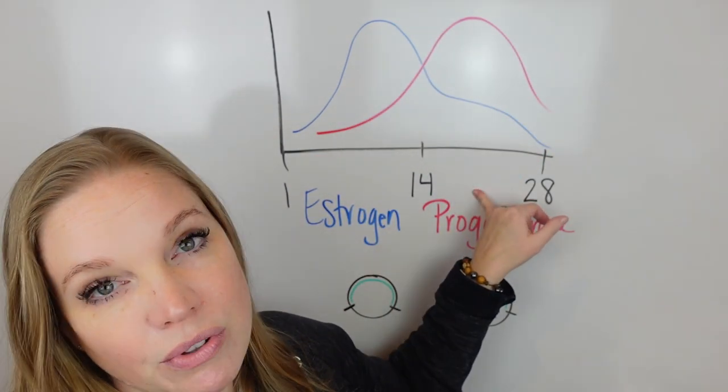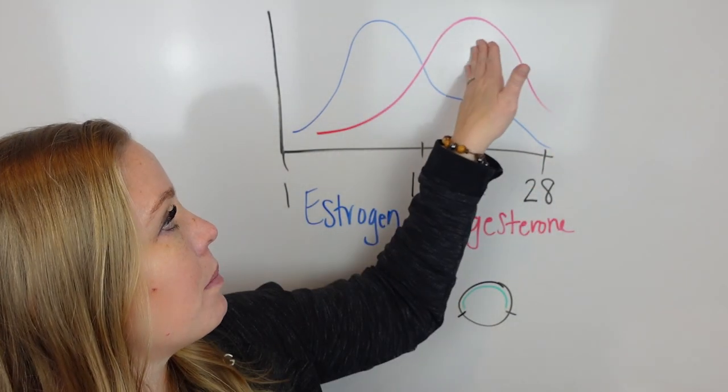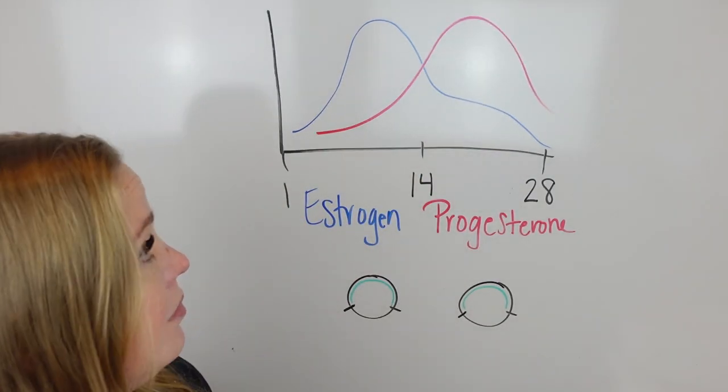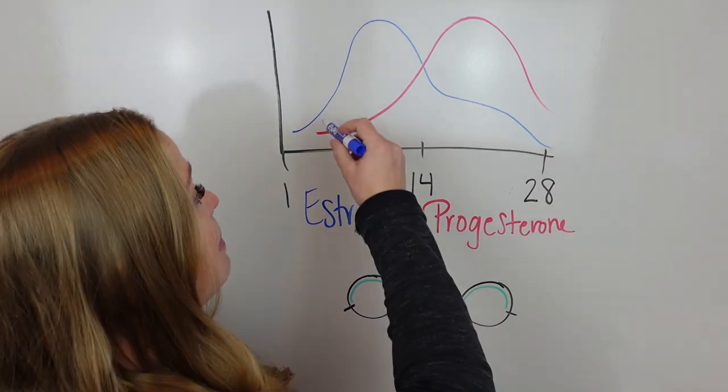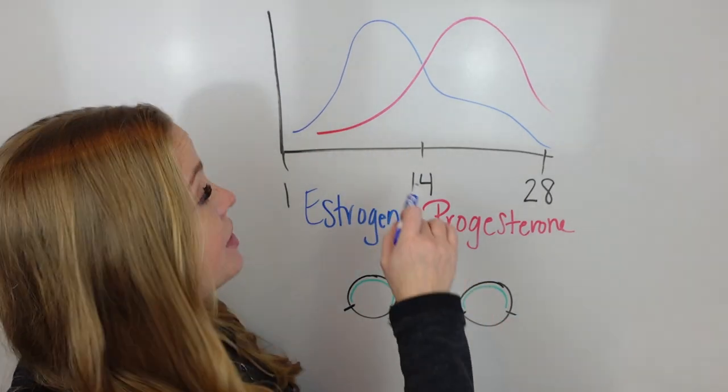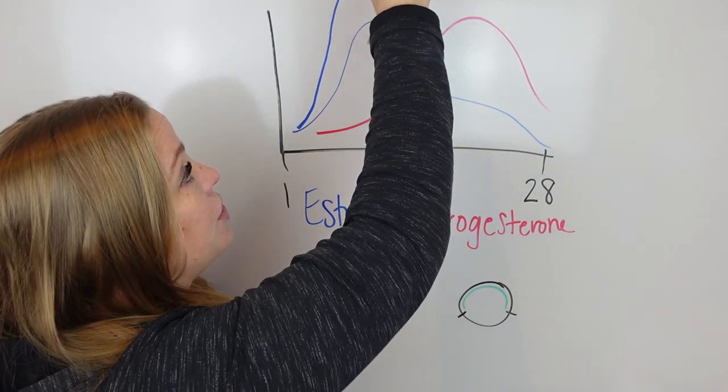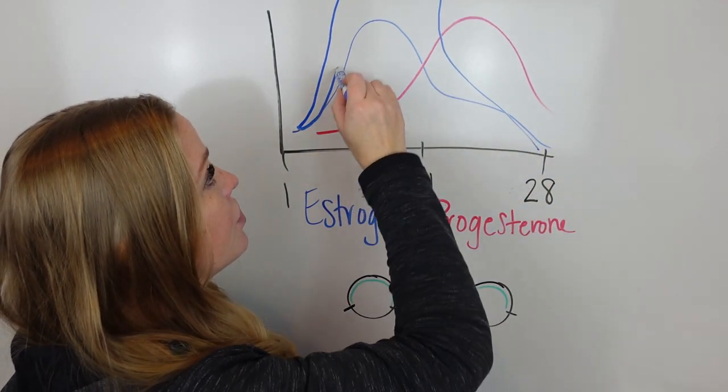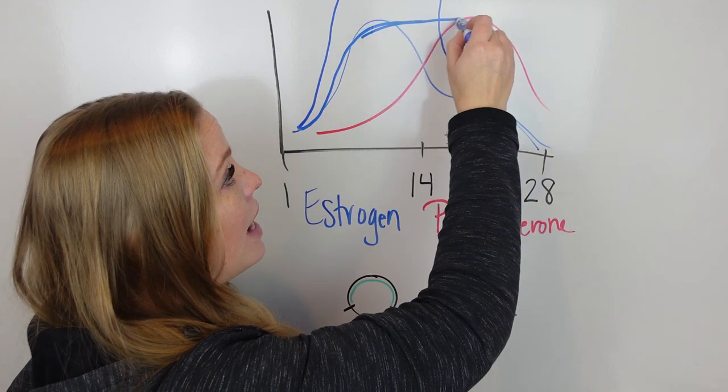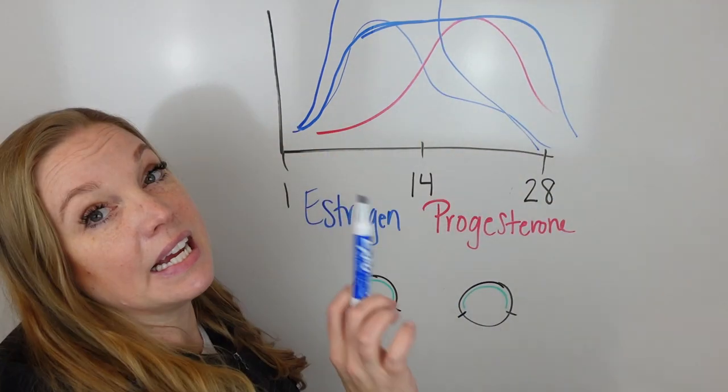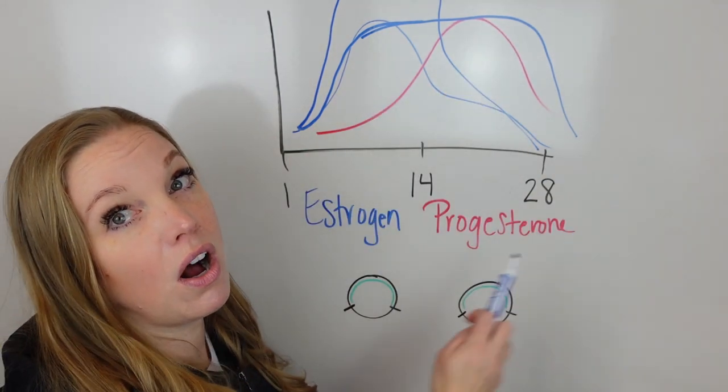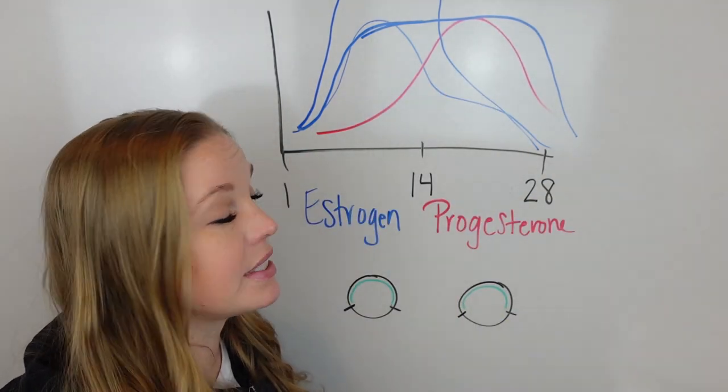When we switch over into the second half of the cycle, you would want progesterone to be more dominant. What happens a lot of the time though is that estrogen sometimes will spike too high. These are different versions of it. Estrogen will spike too high here but still come down. Sometimes estrogen elevates and does not come down, and it's still too high here. In either case, you're having too much estrogen, too much overall for what your system is noticing.